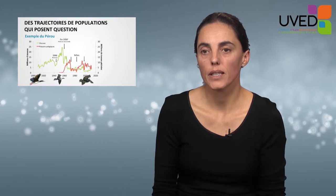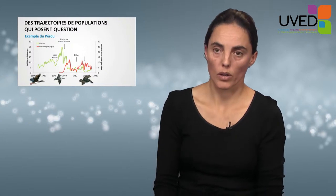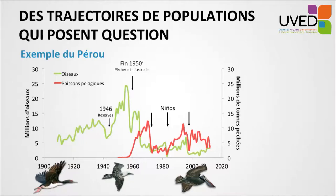In many marine ecosystems, a large variety of seabird populations is observed. Take the coast of Peru — here we have the evolution of the number of cormorants, gannets, and pelicans, and the quantity of anchovies being landed during the 20th and 21st century. These fishes are their main prey.